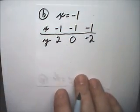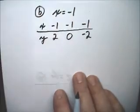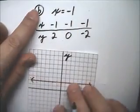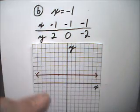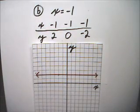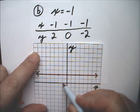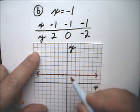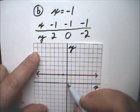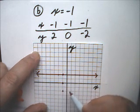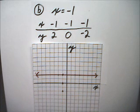So graphing this line, x equals negative 1. Using this table of values, I have negative 1 comma 2, and I have negative 1 comma 0, and I have negative 1 negative 2. And the graph of this equation, x equals negative 1,